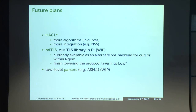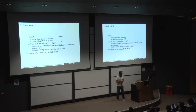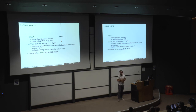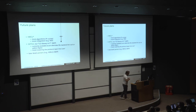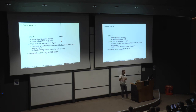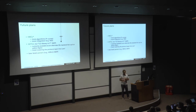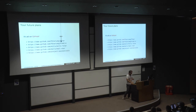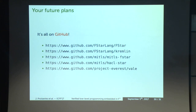Our future plans are mostly to extend HACL* with more algorithms, especially the P curves. We want to continue work with Mozilla to integrate more of our C code into their NSS library. For METLS, we want to finish lowering the protocol layer into Low*. We're also actively working on verified low-level parsers, which have historically been a huge source of bugs. It is all on GitHub, all open source, and we take pull requests — so if you're curious, feel free to give it a go.